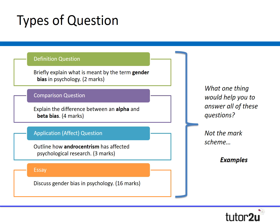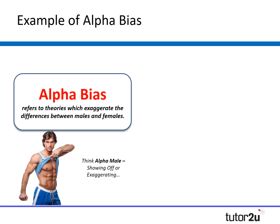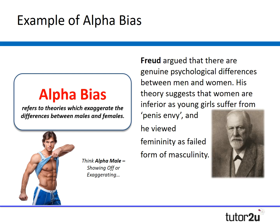Examples could help you with a definition question, a comparison question, an application question, and certainly an essay question. So let's go back to alpha bias — theories that exaggerate the differences between males and females. Freud is a famous psychologist who is a key case of committing an alpha bias. Freud argued that there were genuine psychological differences between males and females, spent most of his life researching males, and suggested that women are inferior — young girls suffer from penis envy, and he viewed femininity as a form of masculinity. He's clearly exaggerating differences and making males out to be more superior, so that's an example of alpha bias.